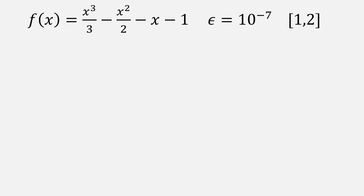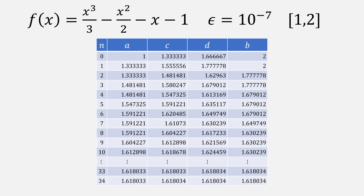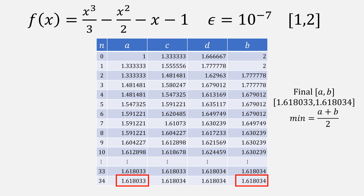Here's what that process looks like numerically. For the example function x³/3 − x²/2 − x − 1, with an ending epsilon of 10⁻⁷ and starting interval of [1, 2], it takes about 34 iterations to meet that ending epsilon. Our final a and b gives us a minimum of (a + b) / 2, which is about 1.61.